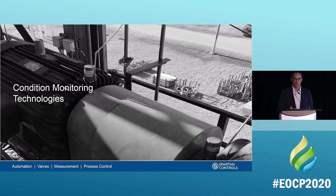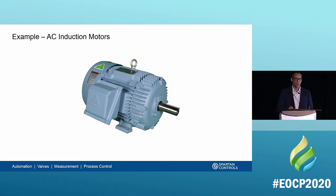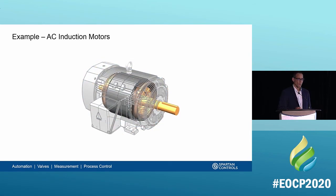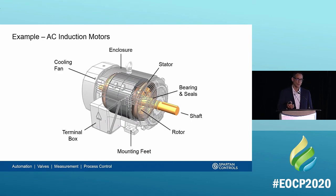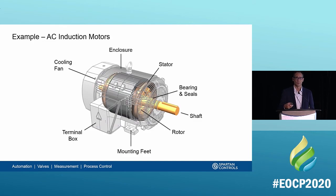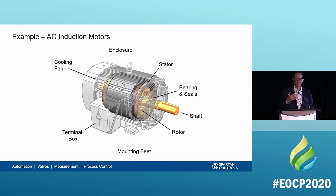Now let's talk about the specific technologies involved in condition monitoring. We'll use the ubiquitous AC induction motor because no matter what industry you're in, you'll see many of these. Looking inside the AC motor, the key parts include the rotor and stator — electrical current applied to the stator induces a magnetic flux into the rotor, causing it to spin. The mounting feet anchor the motor to the base given the significant mass and inertia involved, and an integral cooling fan pulls cold air to cool the motor as it runs.